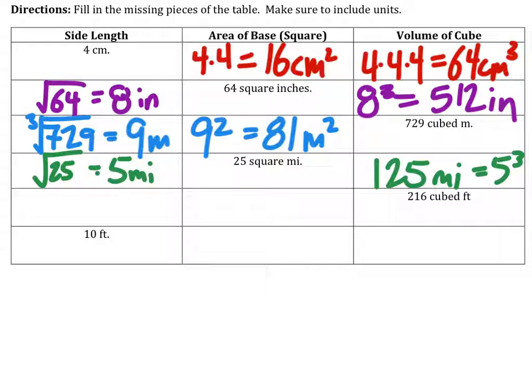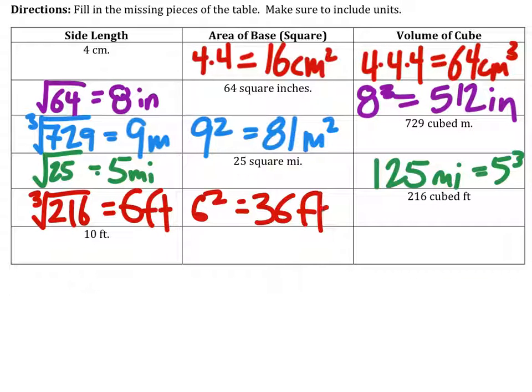The next one is the cube root of 216, which is 6 feet. And so the area would be 6 squared, which is 36 feet squared.